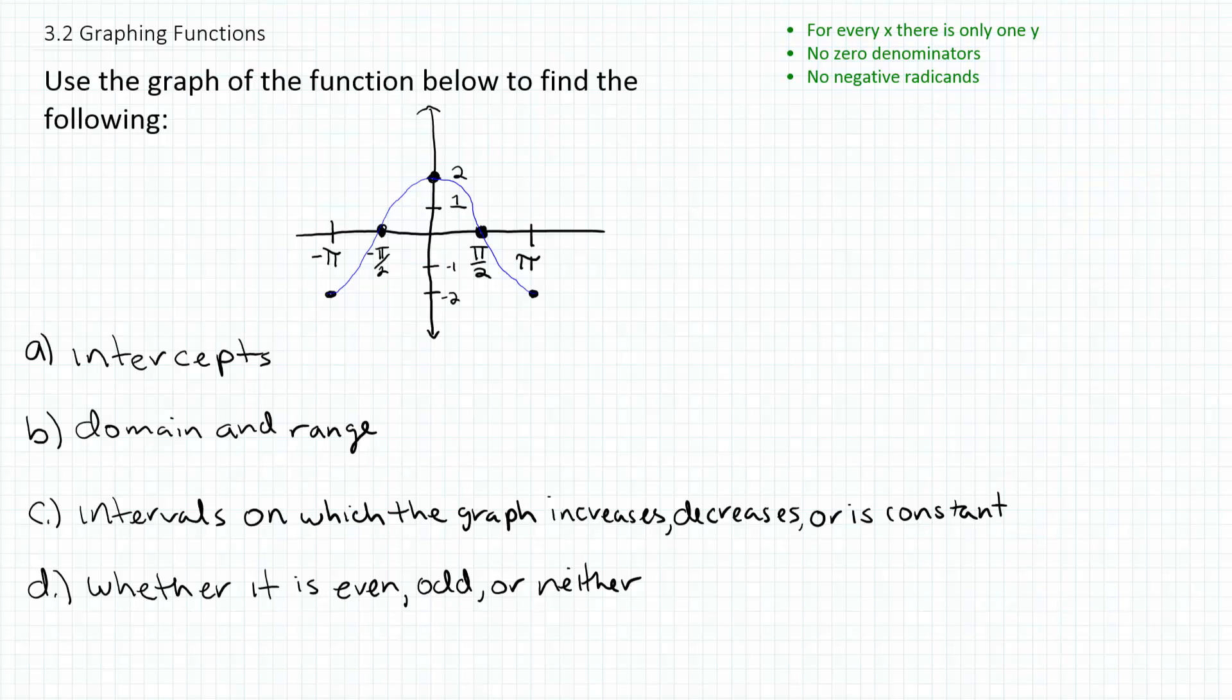Use the graph of the function below to find the following: A, the intercepts; B, domain and range; C, intervals on which the graph increases, decreases, or is constant; and D, whether it is even, odd, or neither.